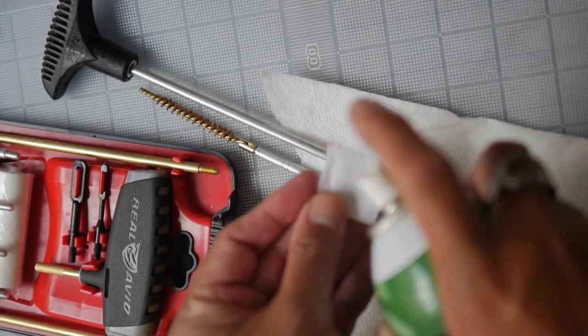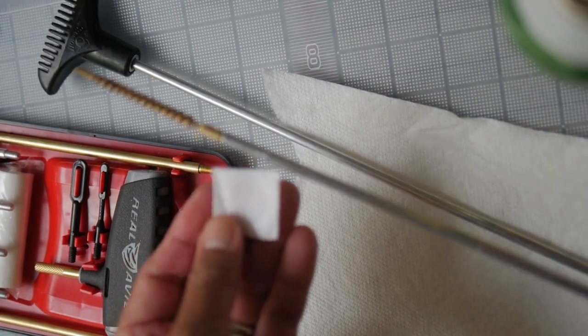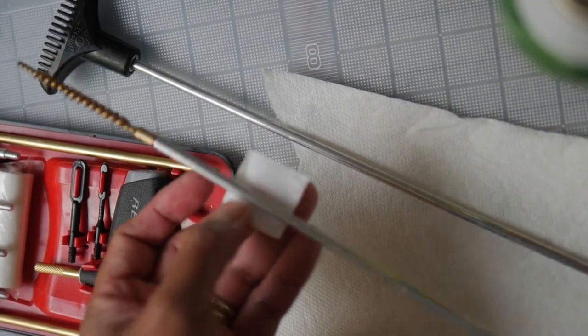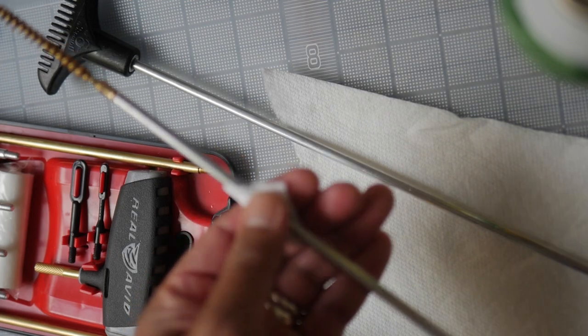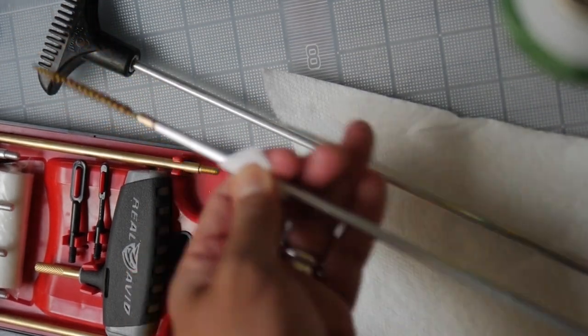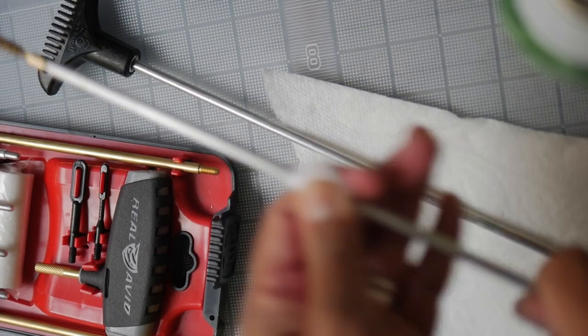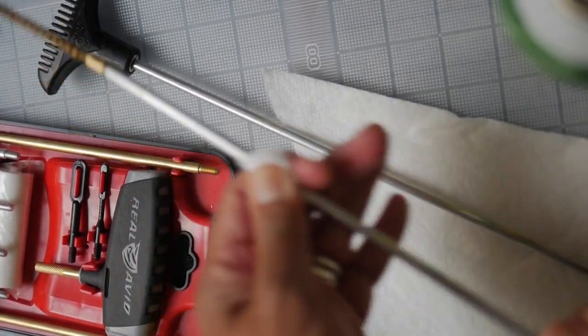You can use any kind of cleaning oil, whether you use CLP or Hoppe's, REM oil, or whatever. And I'm just going to rub this cleaning rod. This is a clean cleaning rod, as you can see. It's not fouled or anything.